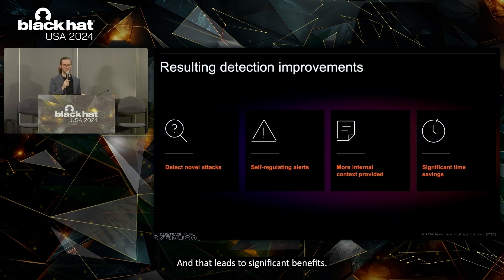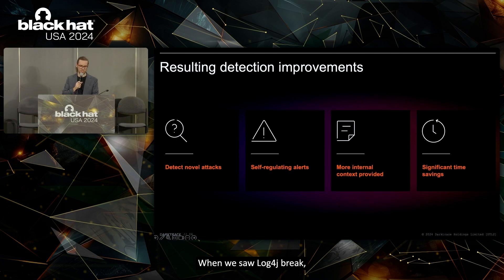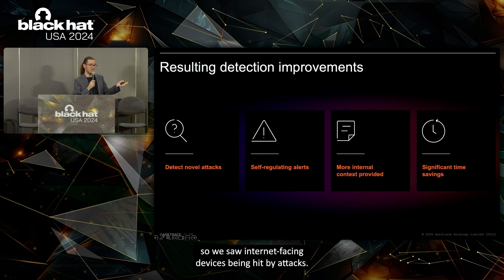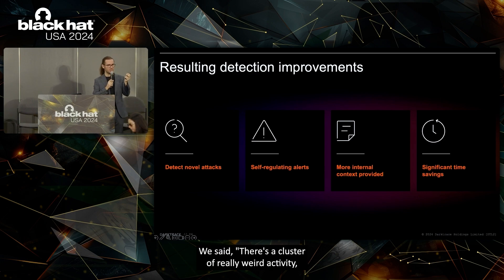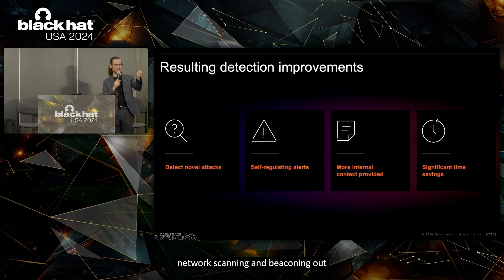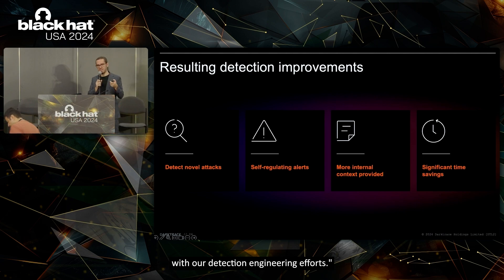That leads to significant benefits. If you do not predefine what you're looking for, you can find novel attacks. When we saw Log4j break, we didn't push down any new detections to our Darktrace customers — it was just another day in the office. We saw internet-facing devices being hit by attacks. We didn't say it's Log4j — we said there's a cluster of really weird activity that looks like initial infiltration, network scanning, and beaconing out. We could react to that in real time without any new detection engineering efforts.